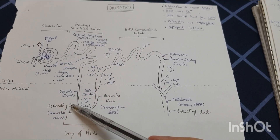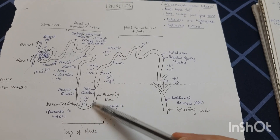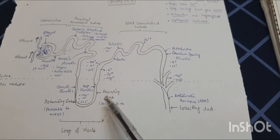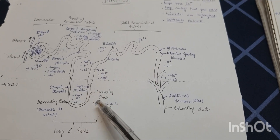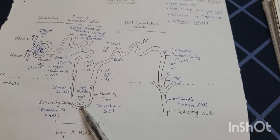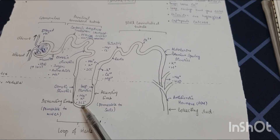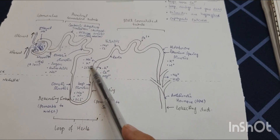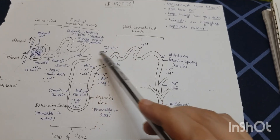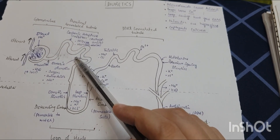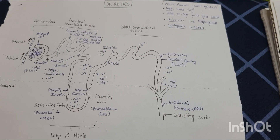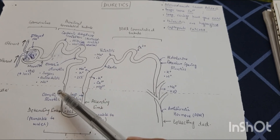The loop diuretics act mainly on the thin ascending limb of the loop of Henle, which is permeable to salts. This results in reabsorption of sodium, potassium, and two ions of chloride, and excretion of potassium, calcium, and magnesium. Osmotic diuretics also act on the proximal convoluted tubule and the descending limb of the loop of Henle; they are permeable to water and filter sugars, amino acids, and sodium.